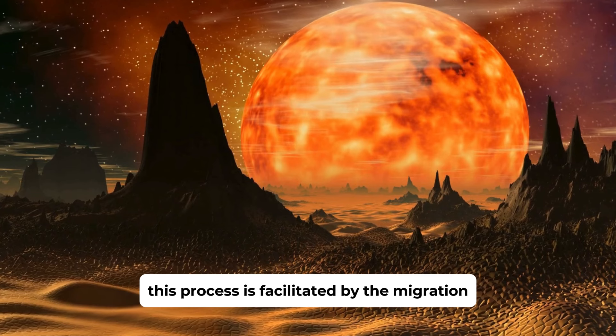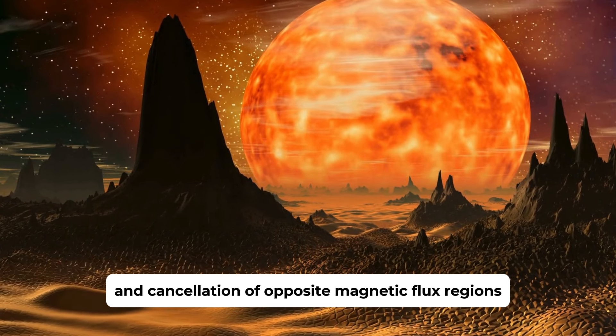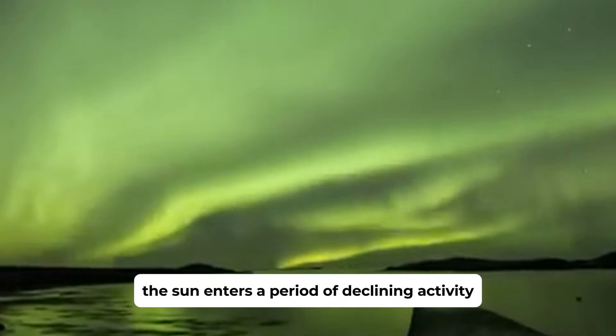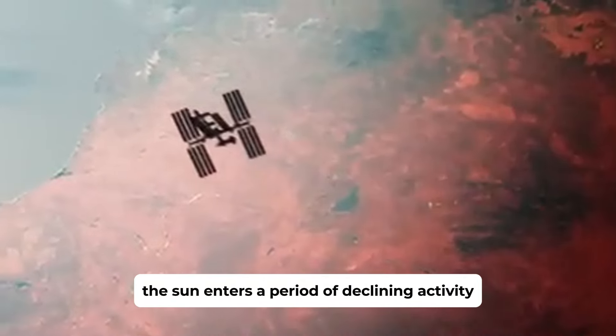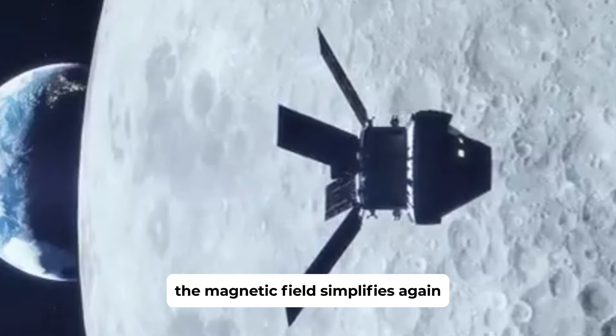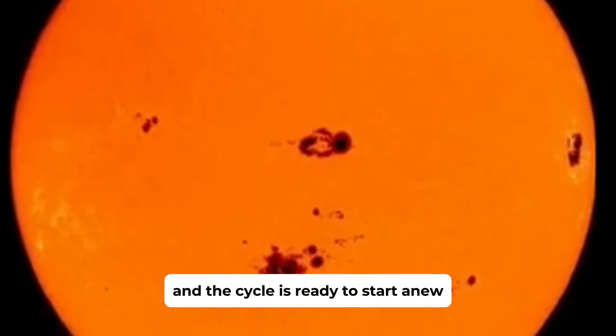This process is facilitated by the migration and cancellation of opposite magnetic flux regions. After the polarity reversal, the Sun enters a period of declining activity, leading back to solar minimum. The magnetic field simplifies again, and the cycle is ready to start anew.